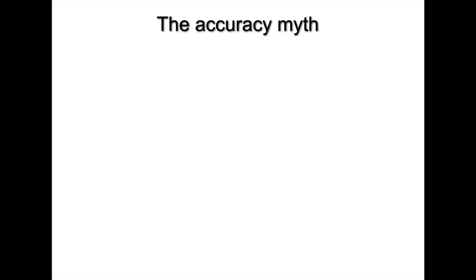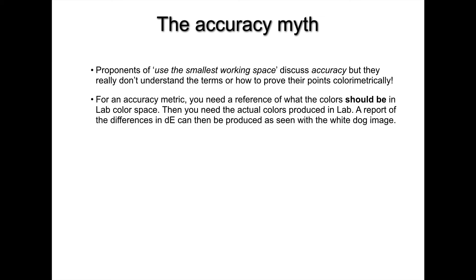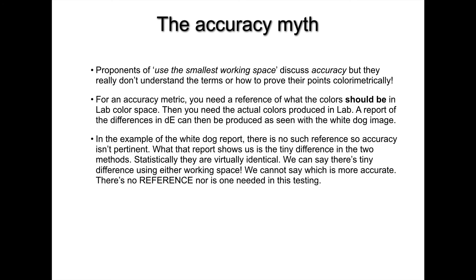The accuracy myth: proponents argue we need to use the smallest working space and then discuss accuracy, but they don't understand the term and can't prove their point. For accuracy, you need a reference and something to compare to the actual image data. In the example of a dog on white, there's no reference — so we're not talking about accuracy, we're talking about difference.